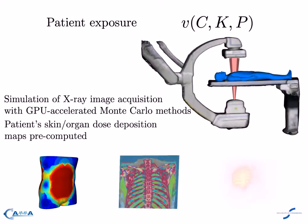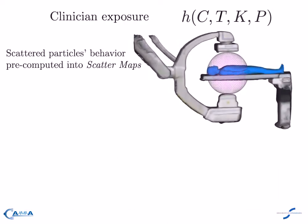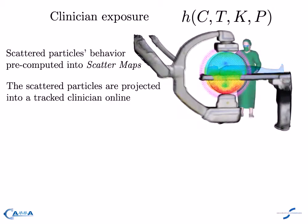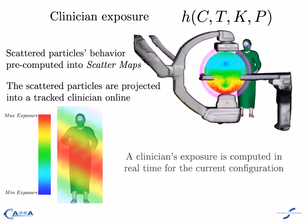Dose maps are pre-calculated for a set of procedure-specific parameters. On the clinician's side, we propose to characterize the behavior of scattered radiation with scatter maps. These allow to compute in real time a clinician's radiation exposure for the current device's pose.